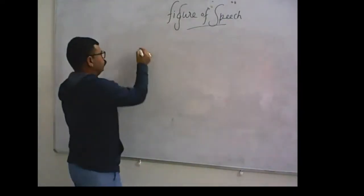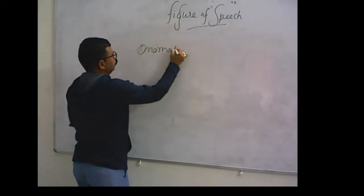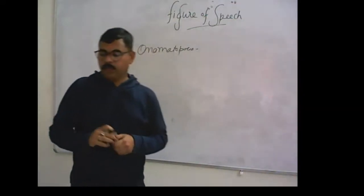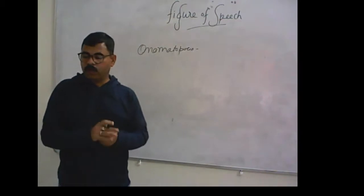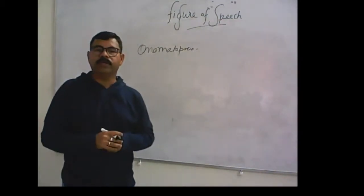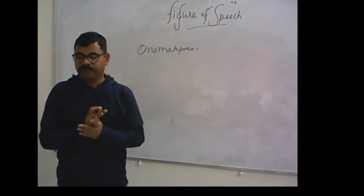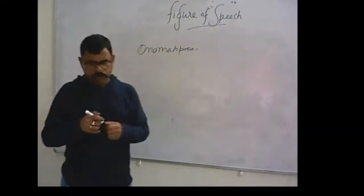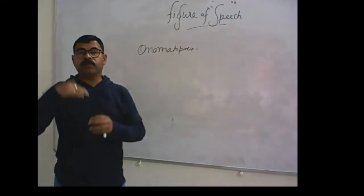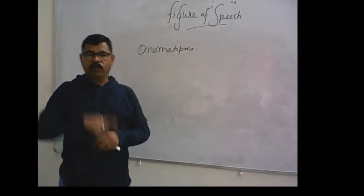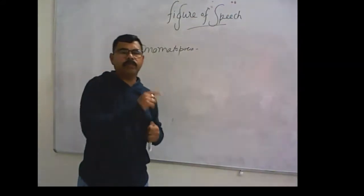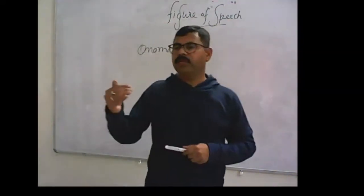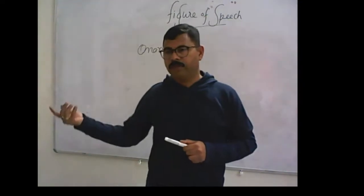Next is onomatopoeia. Onomatopoeia means Dhvani Alankar. In this figure of speech, the sound of the words suggests the sense or meaning only on the basis of sound. If you are in your house at night or in daytime and you hear someone barking out of the door, only by hearing that object, you can identify easily that is a dog, that is a cat.